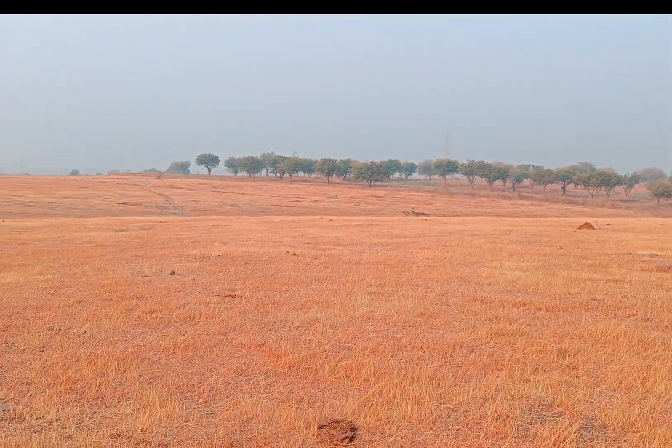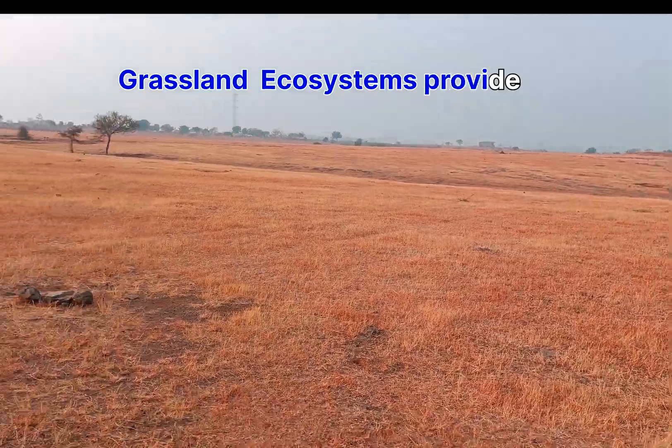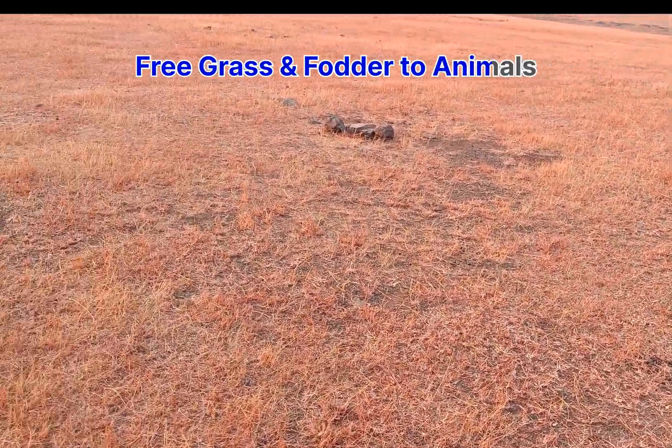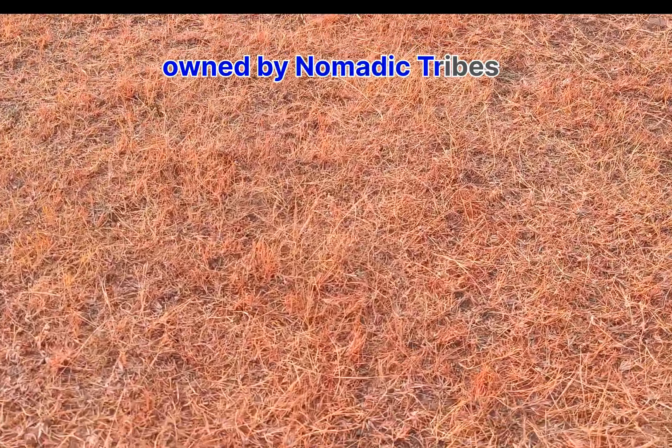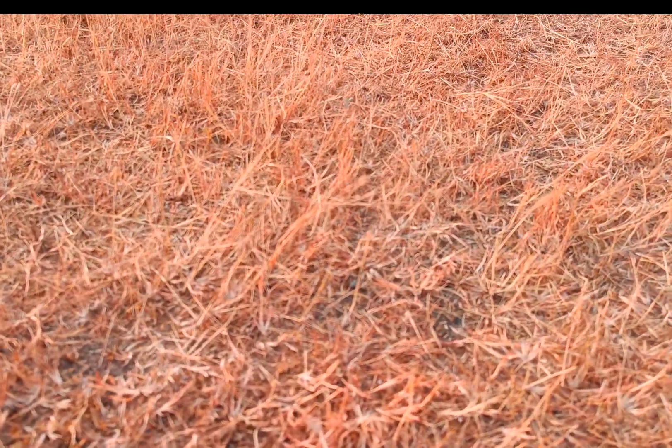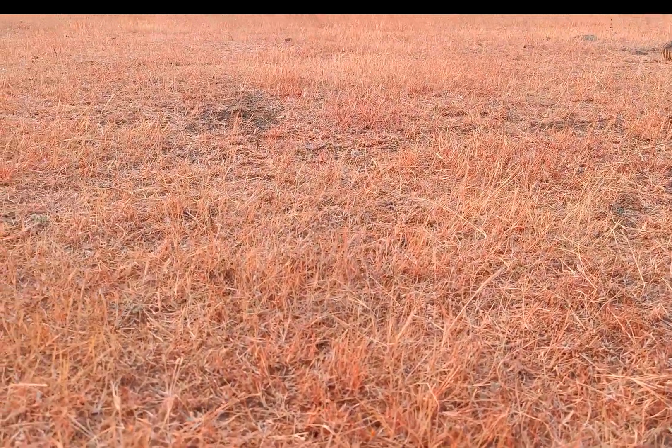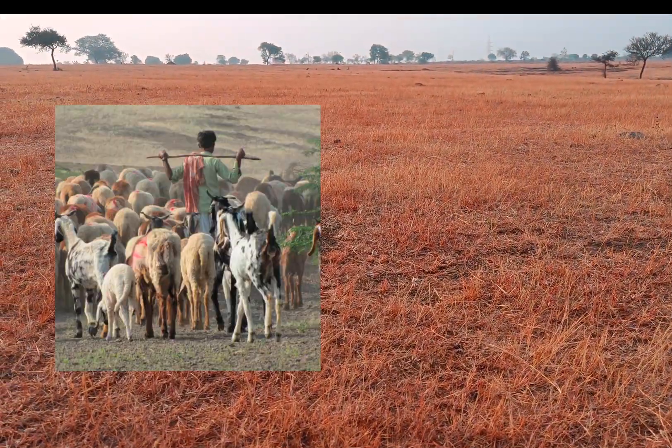The main occupation of these nomadic and pastoral communities is animal husbandry, and these grasslands provide a free resource for those animals and those communities. What is happening now is that these grassland ecosystems are being destroyed and replaced by forest ecosystems. This is really impacting the livelihood of these pastoral and nomadic communities — the grass that was available for free from nature is now something those communities have to buy at a very high rate.